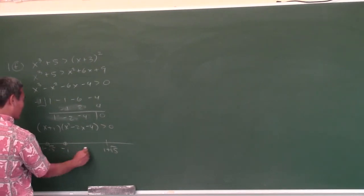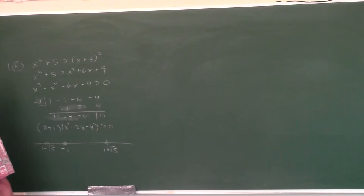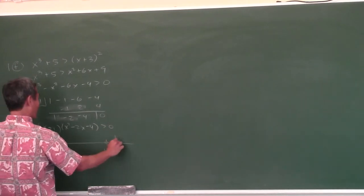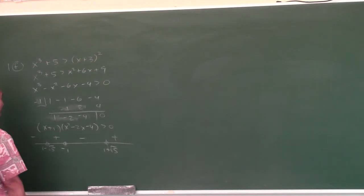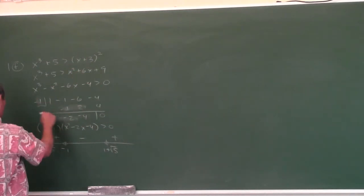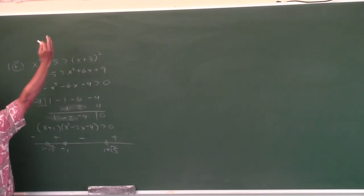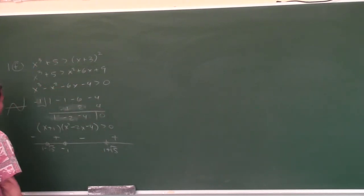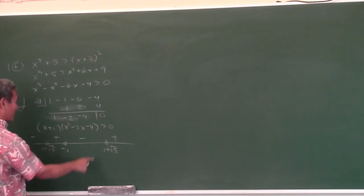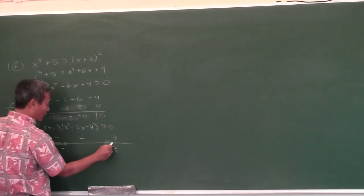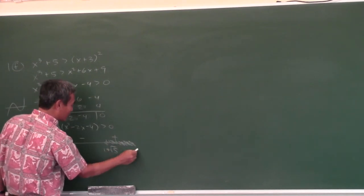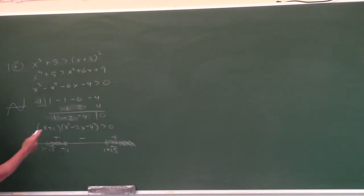None of these are going to be part of the solution. And how do I know it's going to go plus, minus, plus, minus? Because the leading coefficient is positive — it goes like this. Or if you don't know, just plug in numbers. We're looking for greater than zero, so shade in the plus signs. Whatever you see on your number line, write it down.